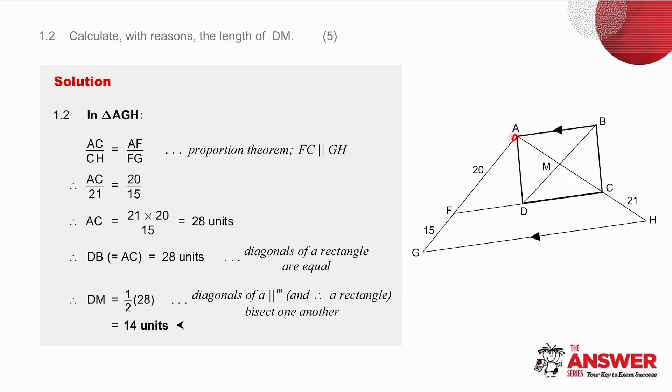I've got this parallel line so I'm going to work in triangle AGH and I'm going to use ratio and proportion. I can say that AC over CH is equal to AF over FG because of my proportion theorem with FC being parallel to GH.